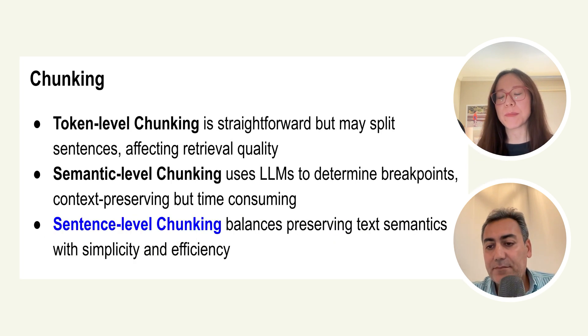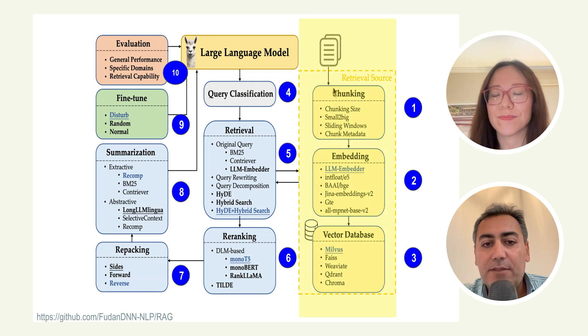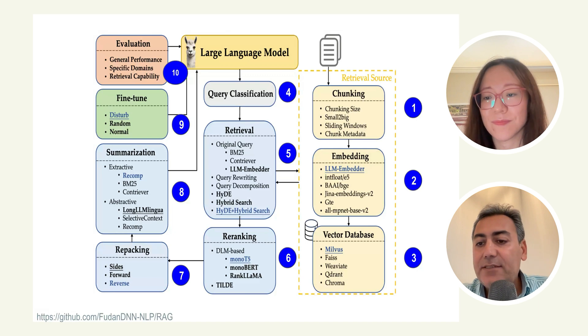How do they come up with the best performing methods to start with? That's a good question. There aren't necessarily any source saying these are the best approaches; however, there are some popular approaches for some modules and they used those. They didn't mention exactly how they picked up to three best performing methods for each module. Now, chunking is the first module. We're going to talk about chunking and then embedding and vector databases, just explaining at a very high level.